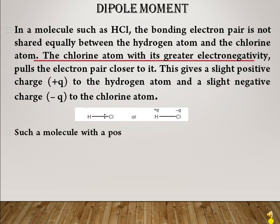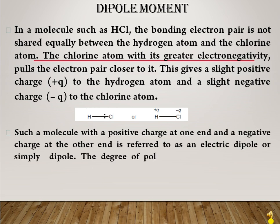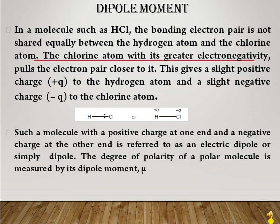Such a molecule with a positive charge at one end and a negative charge at the other end is referred to as an electric dipole, or simply a dipole. The degree of polarity of a polar molecule is measured by the dipole moment, denoted by mu (μ). How polar a solvent is can be detected by calculating the dipole moment.